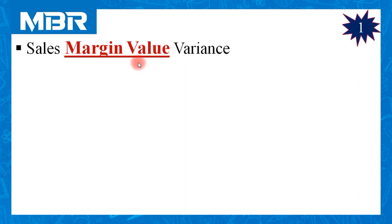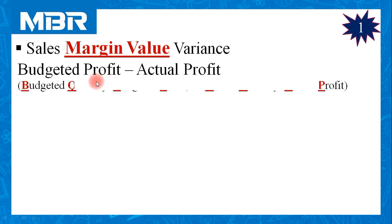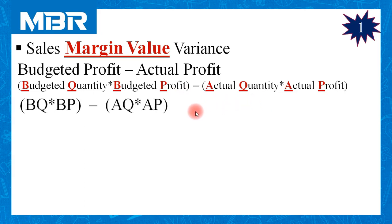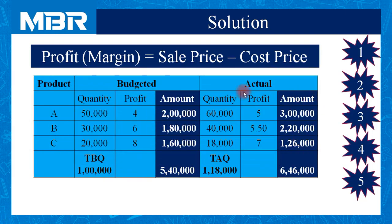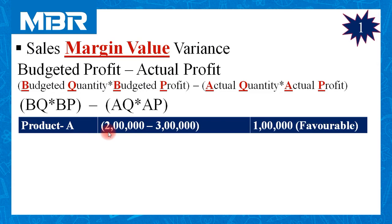Now using this database we need to apply all variances one by one, and the calculation is very simple. Let us calculate the first variance: sales margin value variance. The formula is budgeted profit minus actual profit, or expanded: budgeted quantity multiplied by budgeted profit minus actual quantity multiplied by actual profit. In abbreviation: BQ × BP minus AQ × AP. We can now apply all values from our prepared statement.